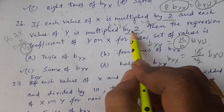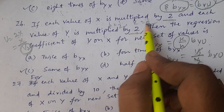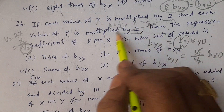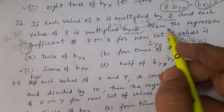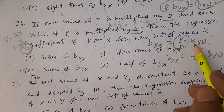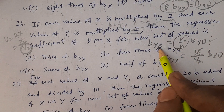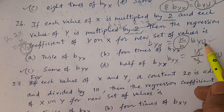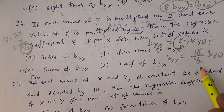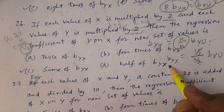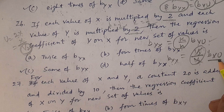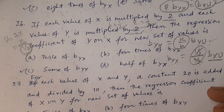K is equal to 1/2 and H is 1/2. We will multiply 2 by 2. The new regression coefficient — for the new set of values, the formula is: byx equals k by h into bvu. K is 1/2, H is 1/2 — cancel. Therefore byx is equal to bvu. No change.